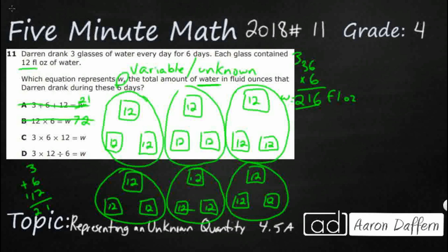So this looks very similar to what we did, 3 times 6 times 12. So we did 3 glasses for 6 days each, 12 ounces each. So let's just go ahead and collapse this 3 times 6.